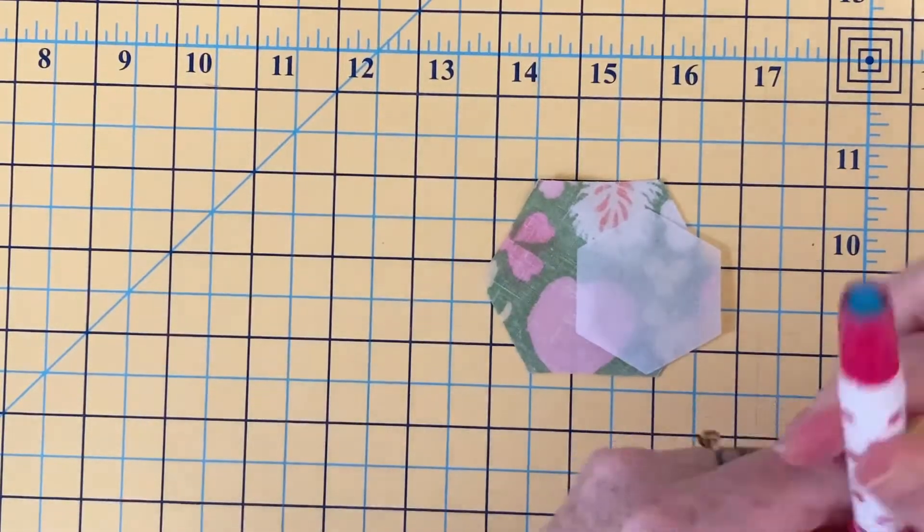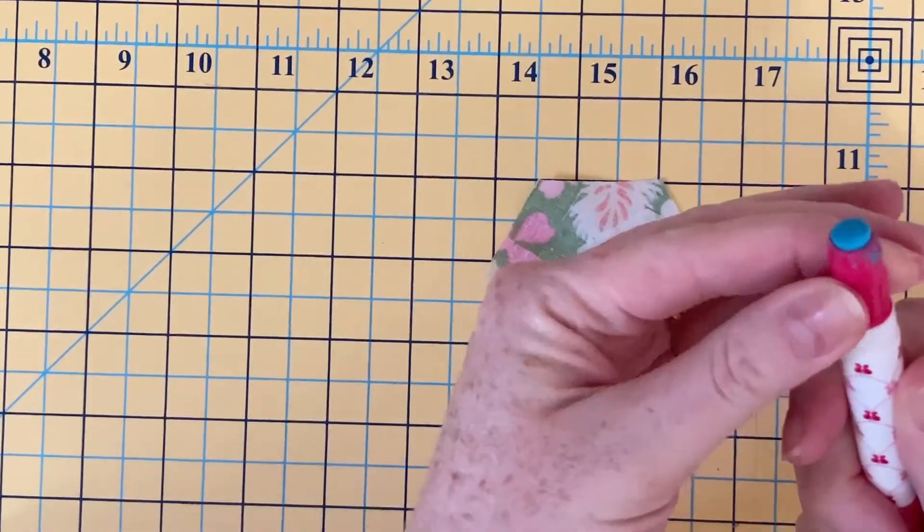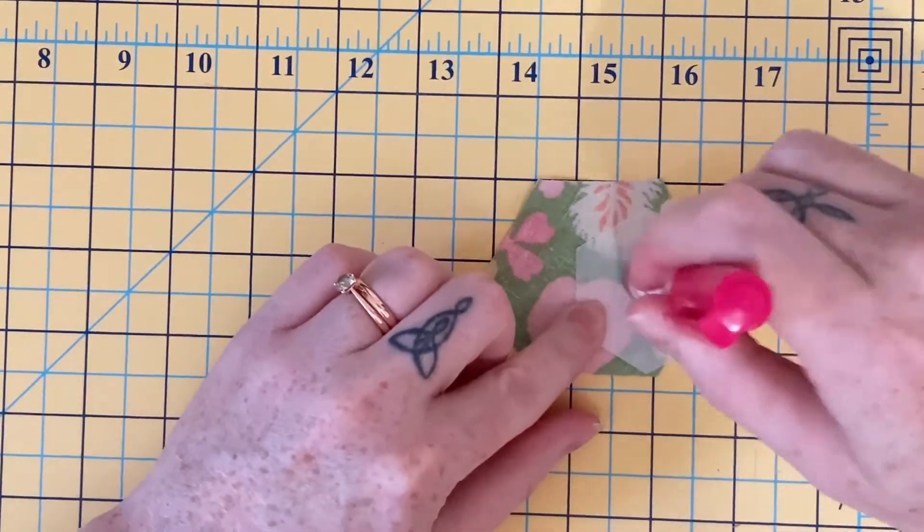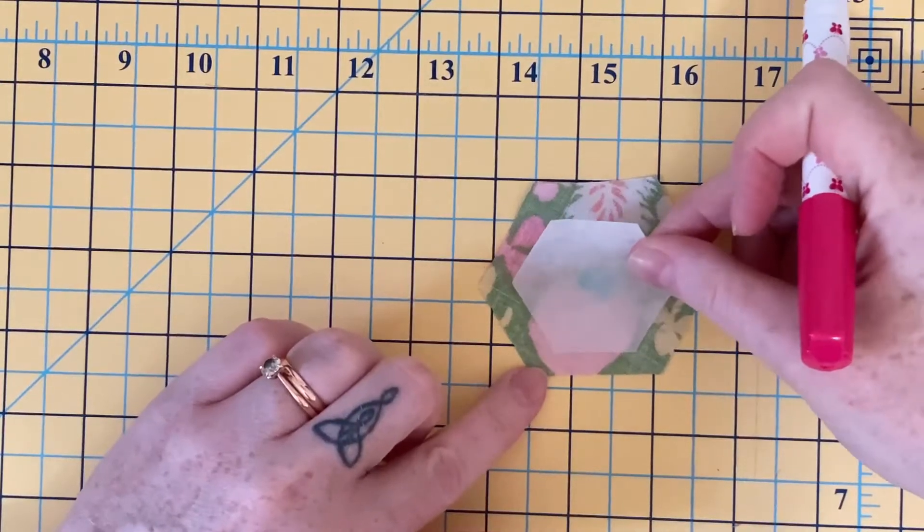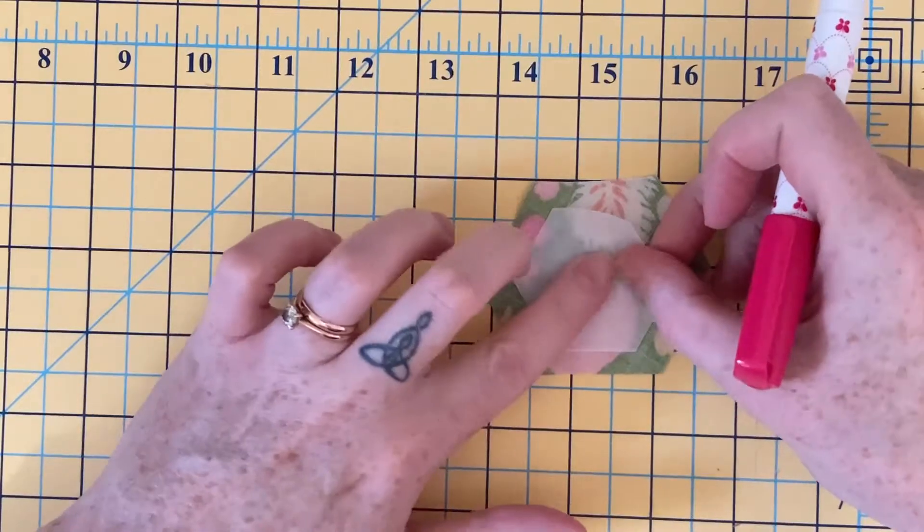Now I'm going to get this ready with a little dab right in the middle and kind of get this in the center.